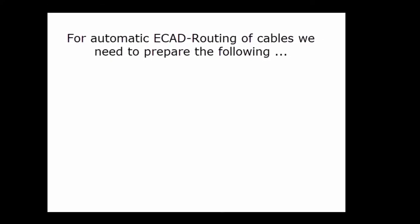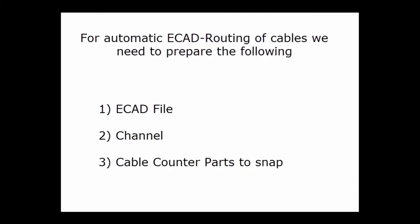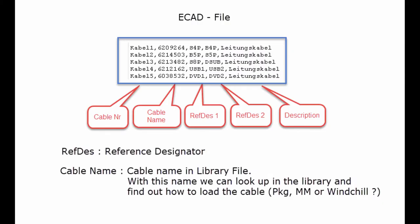For ecat routing you have to prepare a few things. First, you need the ecat file — it defines the connections and how to load the cables. Then you need a channel in 3D, which you prepare in Space Cable, and you need the cable counterparts to snap the cable ends to.